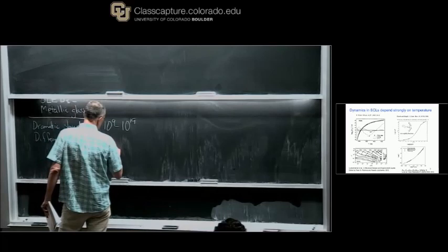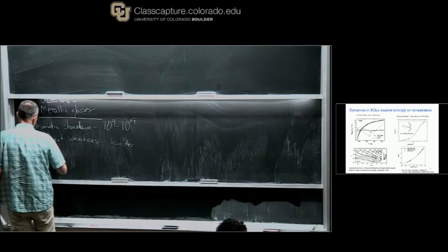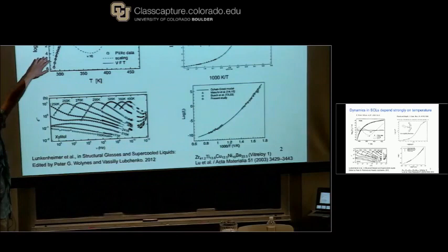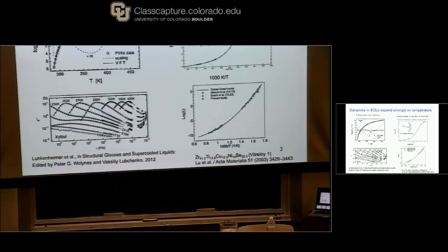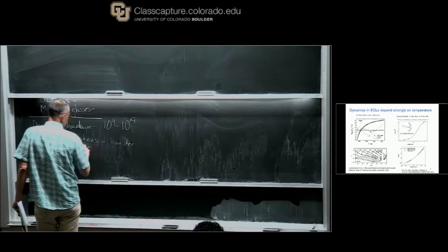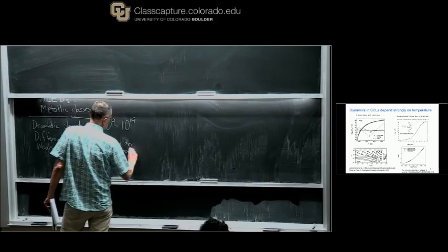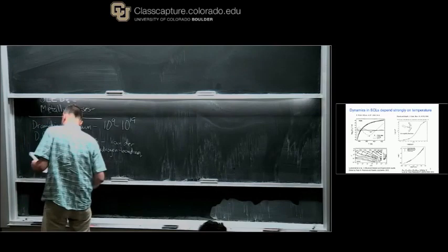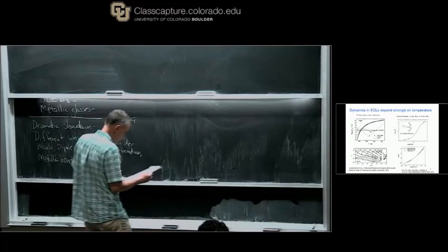We have van der Waals interactions for tris-naphthylbenzene — presumably purely van der Waals. Dipole-dipole interactions for xylitol — this molecule has a big dipole. Hydrogen bonding for xylitol as well. And metallic bonding for the metallic glass case in the lower right.